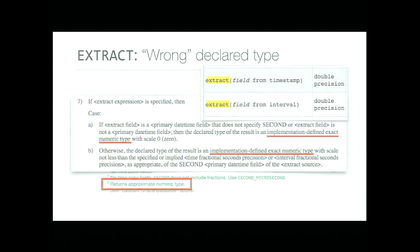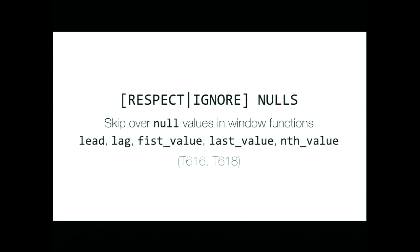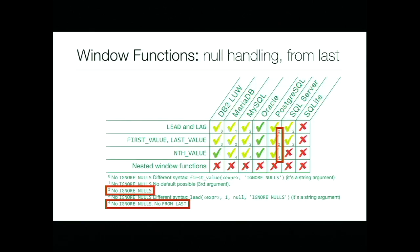The next gap is well known in the community and also documented: RESPECT NULLS and IGNORE NULLS in window functions like FIRST_VALUE and LAST_VALUE. Some databases support that, so there is technically a gap. There is a patch — Jeff Davis wrote an initial patch, building on one that was abandoned earlier. He and others were hoping to bring it back, but it hasn't been applied for Postgres 11.